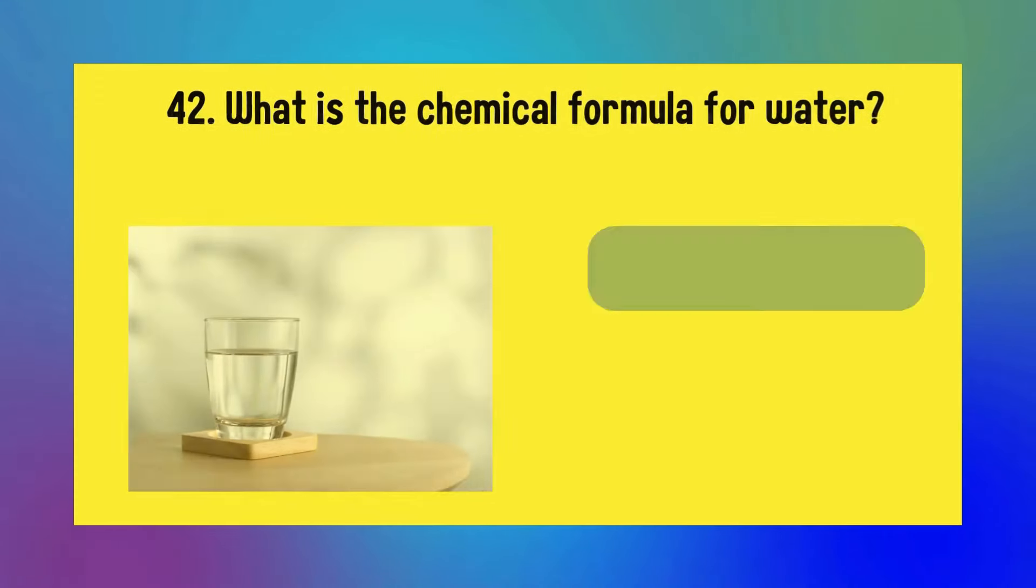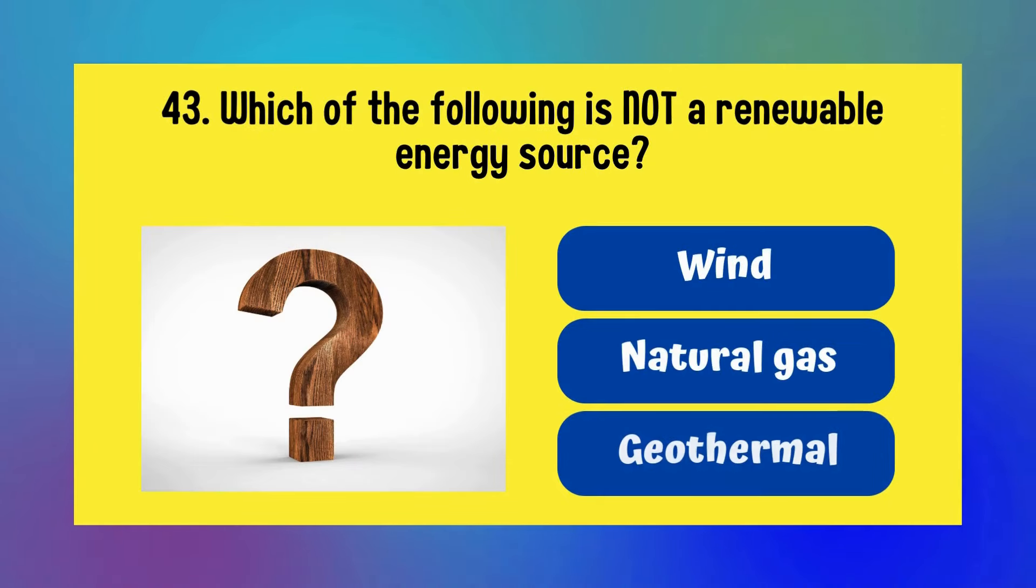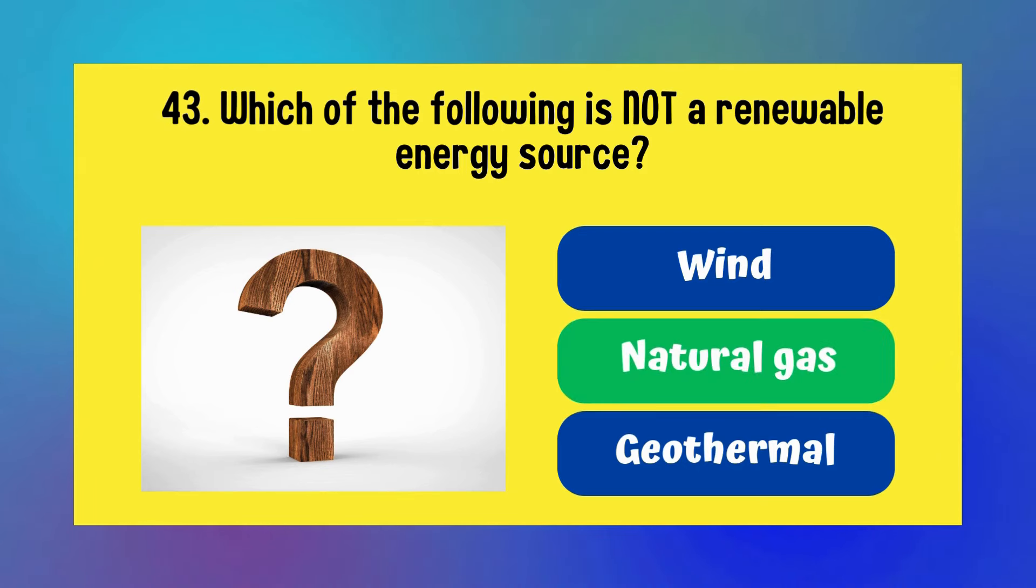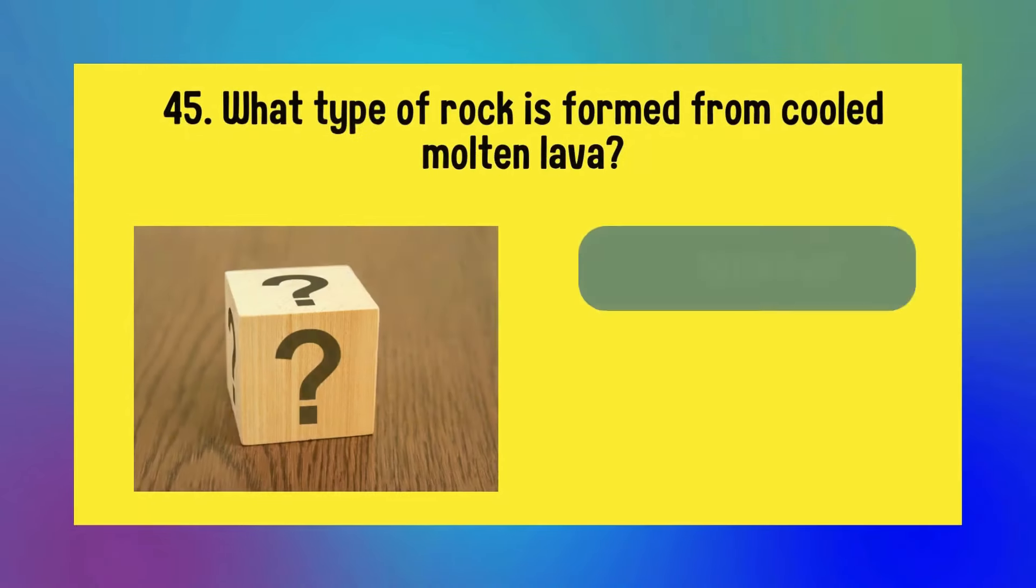Which of these is referred to as the basic building block of chemistry? Atom, cell, or molecule? Answer is atom. What is the chemical formula for water? H2O2, O2, or H2O? It is H2O. Which of the following is not a renewable energy source? Wind, natural gas, or geothermal? Answer is natural gas.